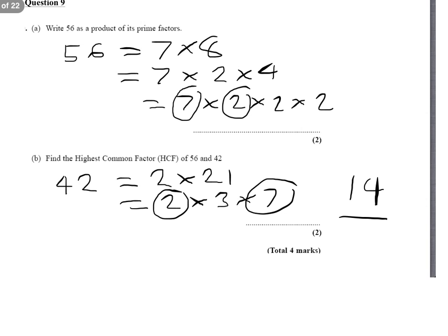This means that 14 is the biggest number that goes into 42 and 56. In fact, 14 times 4 is 56, and 14 times 3 is 42.